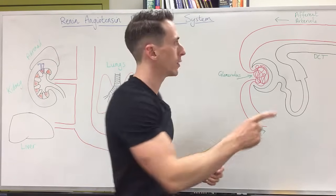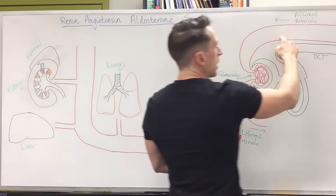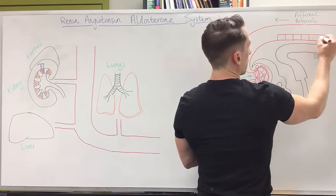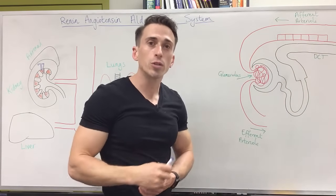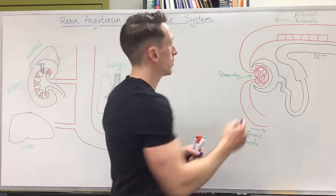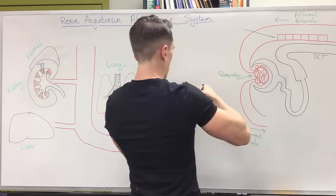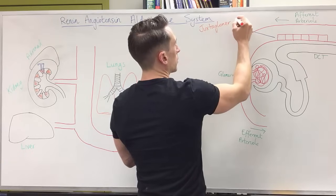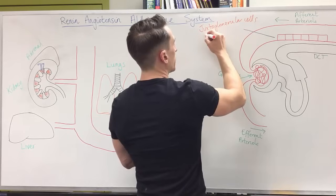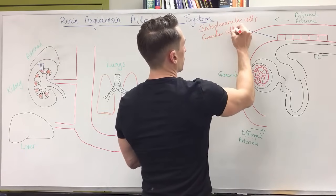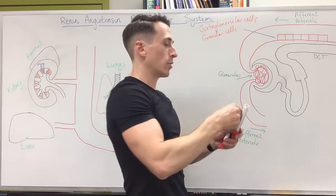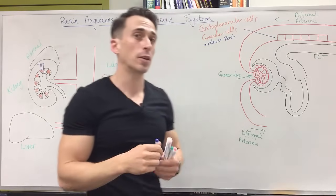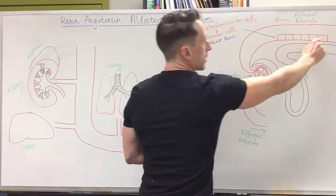Where is renin specifically released from? In the afferent arteriole — the blood coming in — there are some cells in the walls of the afferent arteriole called juxtaglomerular cells, also known as renin-releasing granular cells. These are the cells that actually release renin. Renin is an enzyme — not a hormone — and it is released by the granular cells of the afferent arteriole.